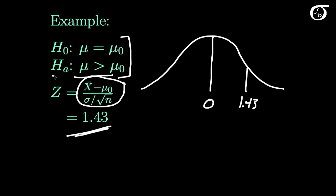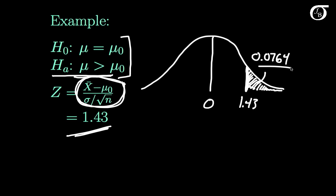My alternative hypothesis is that mu is greater than mu-zero. If x-bar is a lot greater than mu-zero, that gives evidence against the null hypothesis in favor of the alternative. So the larger the value of this test statistic, the greater the evidence against the null. My p-value is the probability of getting the value that we got — 1.43 — or something even larger, which is simply the area to the right of that test statistic. Using a computer or the standard normal table, that area is 0.0764, so that is my p-value in this scenario.